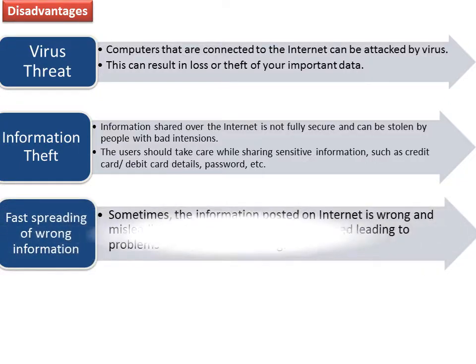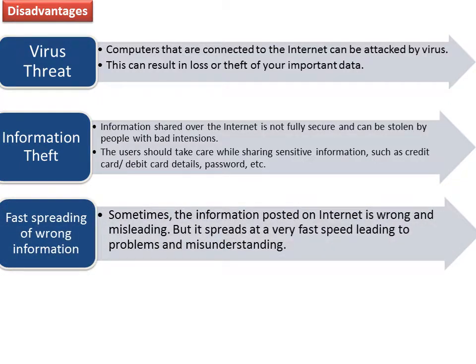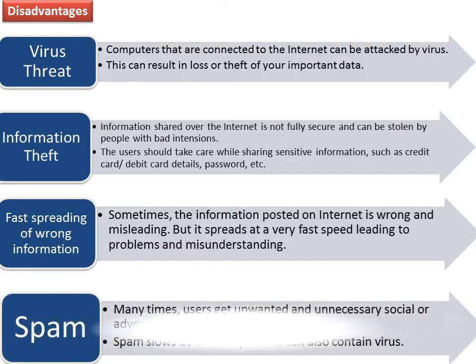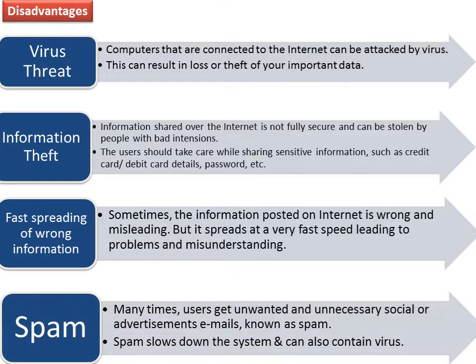Fast Spreading of Wrong Information: Sometimes, the information posted on the internet is wrong and misleading, but it spreads at a very fast speed, leading to problems and misunderstanding. Spam: Many times, users get unwanted and unnecessary social or advertisement emails, known as spam. Spam slows down the system and can also contain viruses.